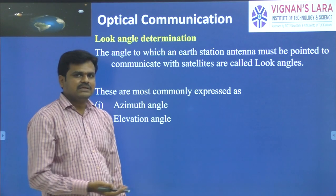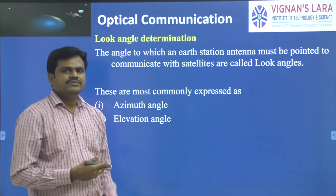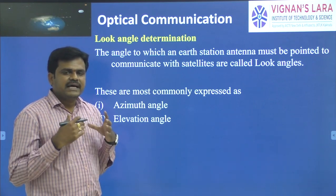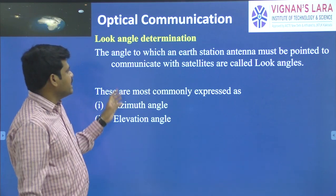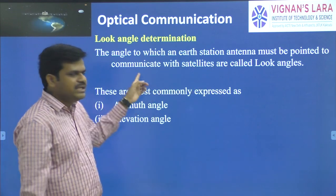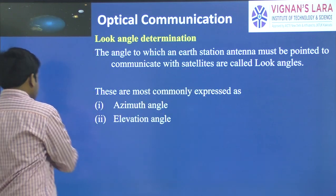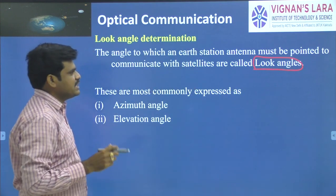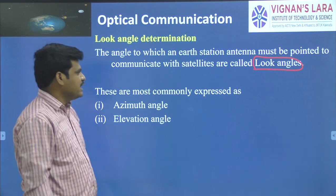We now go to another concept called look angle determination, which makes it very easy for the antenna to point towards the satellite. The angle to which an Earth station antenna must be pointed to communicate with the satellite is called a look angle.